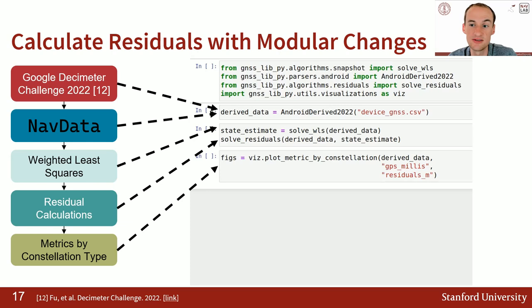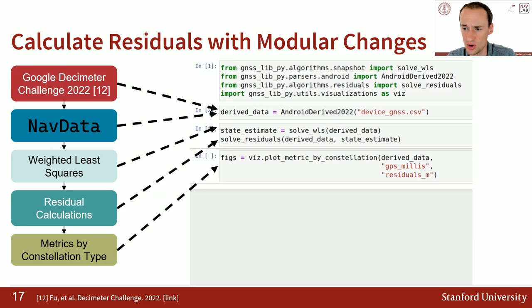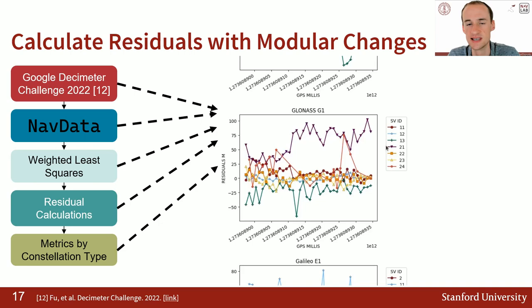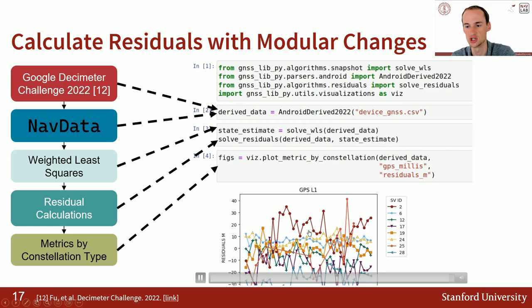To show the modularity: instead of the 2021 Google dataset, we use the newer 2022 dataset, solve weighted least squares, use weighted least squares to calculate the residuals, and then plot it by constellation. After the residuals are calculated, it breaks them up into GPS L1, GPS L2, Galileo, and all of those constellation types that are already labeled within the GNSS data.